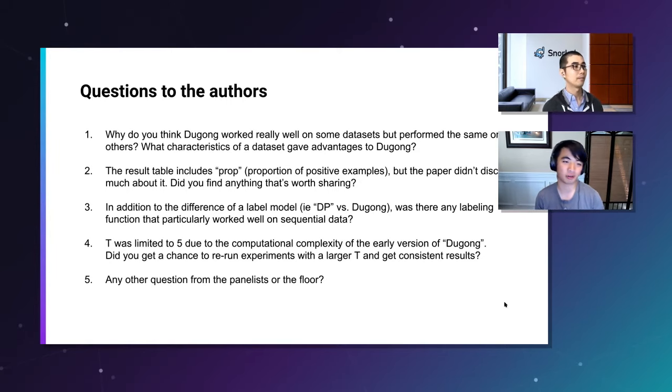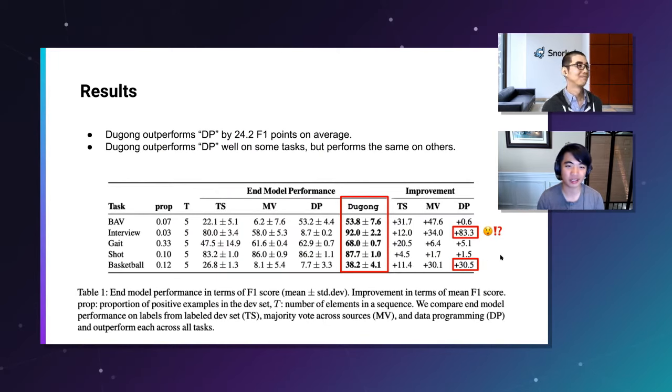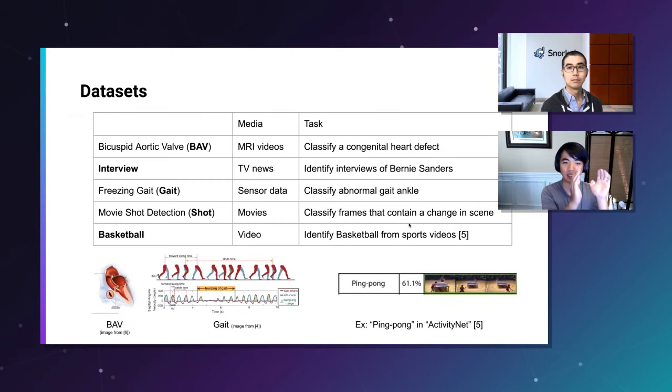Yeah, I guess to just provide some color on the research. I think the thing that we really took away from this experience in this paper was incorporating that temporal prior. Because I think the thing that we learned about working with sequential data is that sometimes it's really easy to write labeling functions that apply on single frames. Sometimes it's easier to write them applying over sequences. And having that knob to just play with the sequential prior was really important. There's two examples that I like. One was shot detection in movies versus something like interviews.